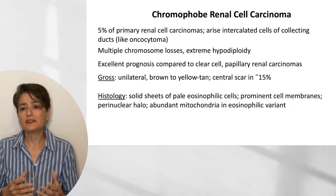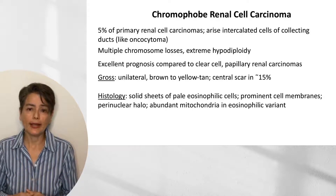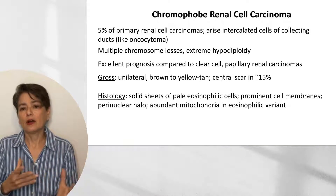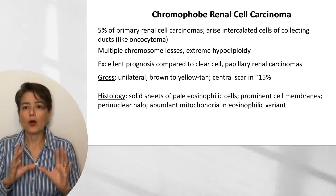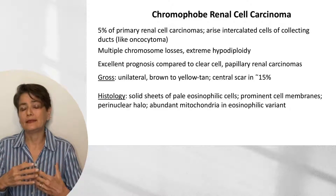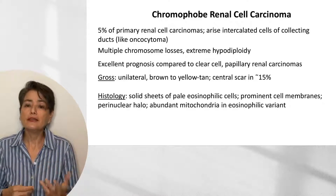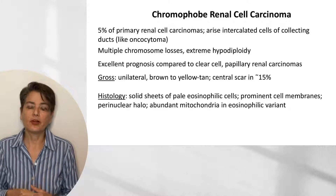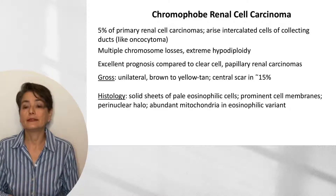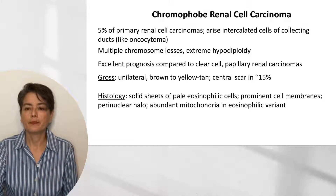Associated with those thick walls is a perinuclear halo. We call it chromophobe because it doesn't have a lot of color, but there is an eosinophilic variant which, like oncocytoma, tends to have abundant mitochondria.